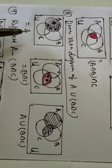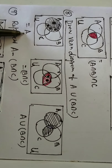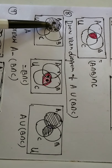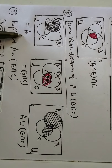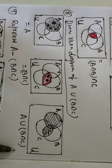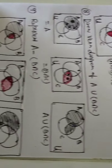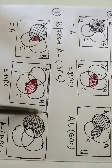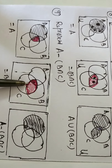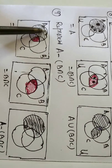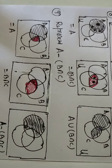Now, Venn diagram for set A: the black shaded region is set A. B intersection C shares a region with A. The common portion of A and B intersection C is marked. Likewise, A minus B intersection C means from A, the part corresponding to B intersection C is removed — what remains is A minus B intersection C.